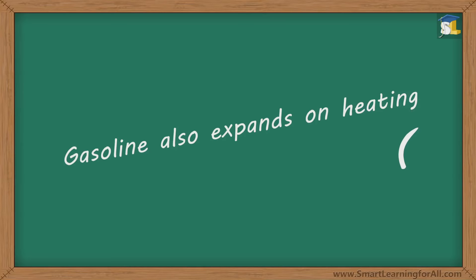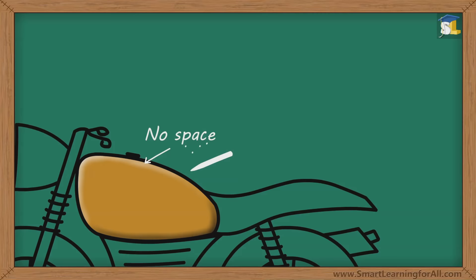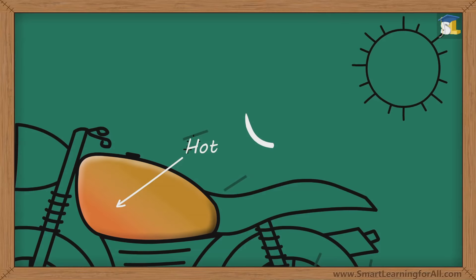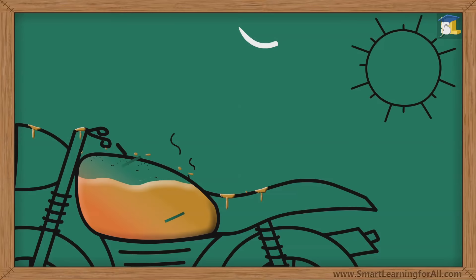So what happened is that when the tank was filled till the brim, there was no space left in it. Now when the bike was kept in the sun, the tank became hot, which eventually heated the gasoline filled in it. As a result, the gasoline expanded. But since there was no space left in the tank, expansion forced gasoline to come out of the tank.